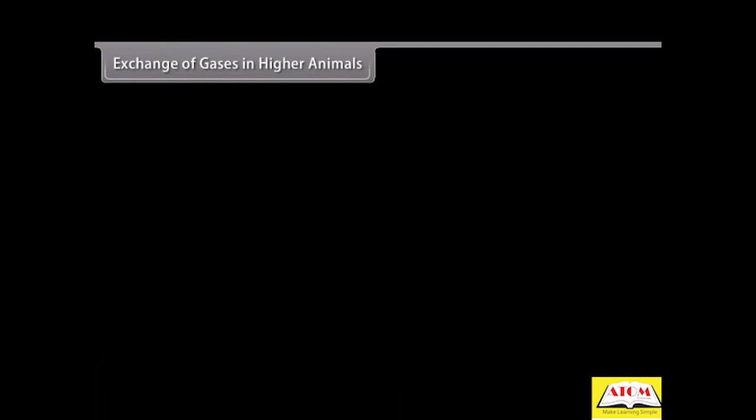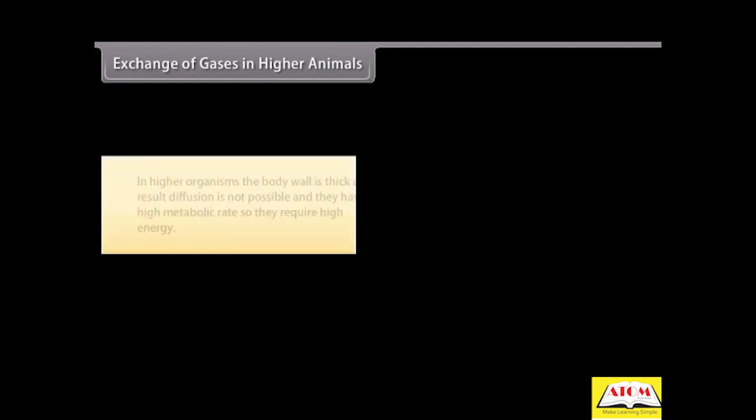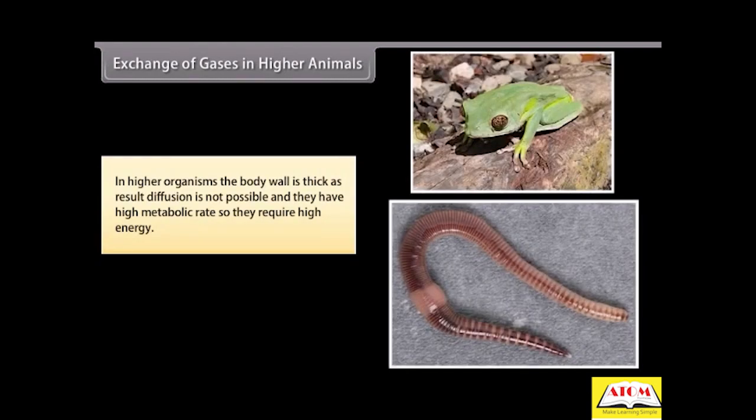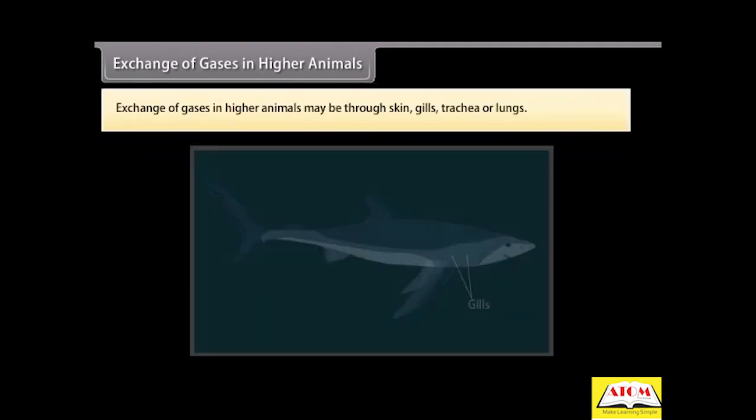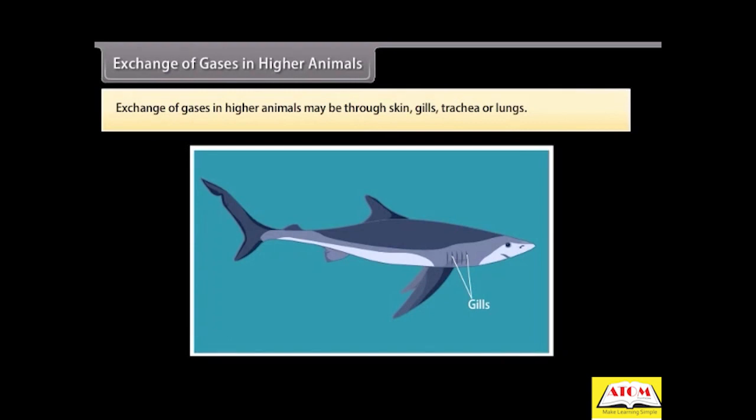Exchange of gases in higher animals. In higher organisms, the body wall is thick. As a result, diffusion is not possible and they have high metabolic rate, so they require high energy. As required, higher animals have special respiratory organs for exchange of gases. They also have blood vascular system to transport oxygen and CO2 between the respiratory organ and the body cells. Exchange of gases in higher animals may be through skin, gills, trachea, or lungs.